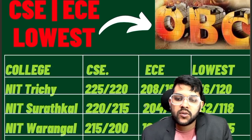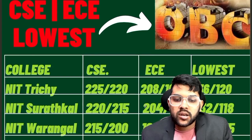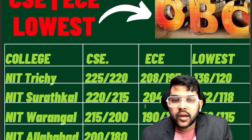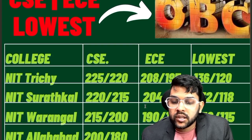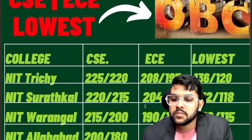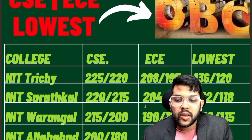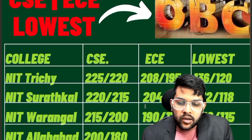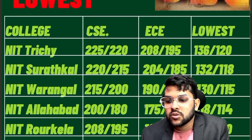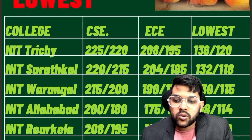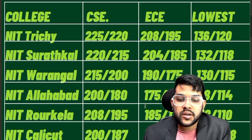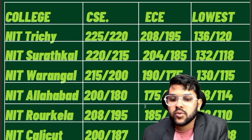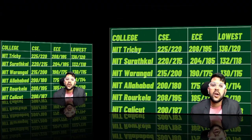For NIT Warangal: 215 and 200 marks for CSE, EC 190 and 175, lowest 130 and 115 marks. For NIT Allahabad: 200 marks for CSE male — for female you can check after the slash — for EC 175, and lowest 118 marks. For Rourkela: 208, 185, 118 marks. For Calicut: 200, 174, 121 marks.